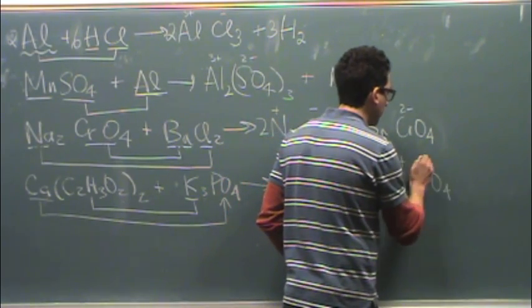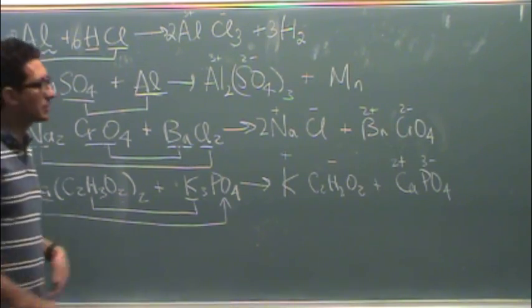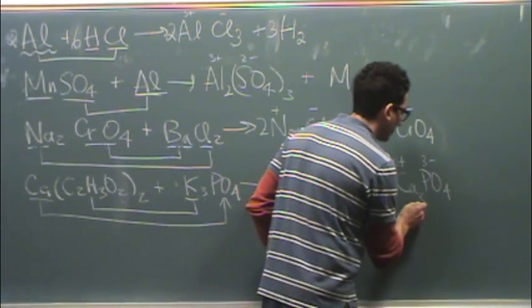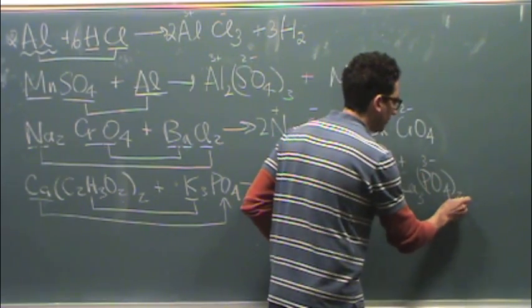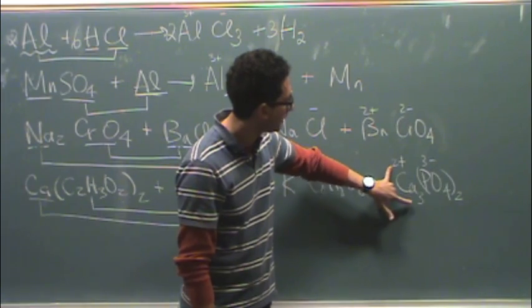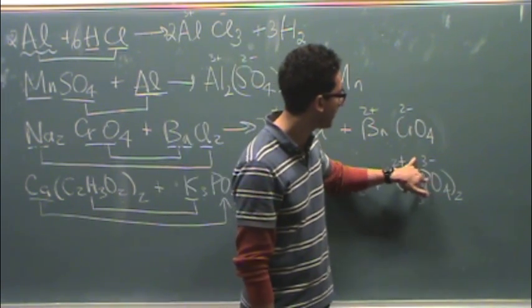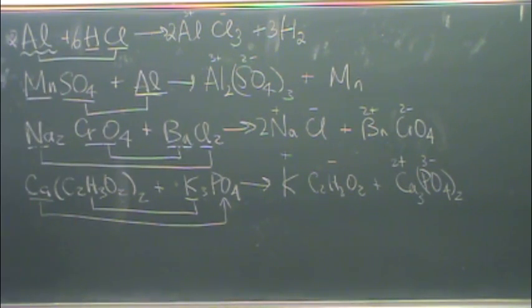The calcium, you know from your table, is two plus. Phosphate is a polyatomic anion and it's minus three. So this is easiest if you just switch the charges, put the three from phosphate here as a subscript and the two here. Three calciums at plus two, that makes plus six. Two phosphates at minus three make a minus six, that one will be neutral. So we're good there.